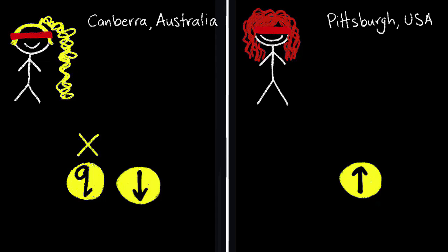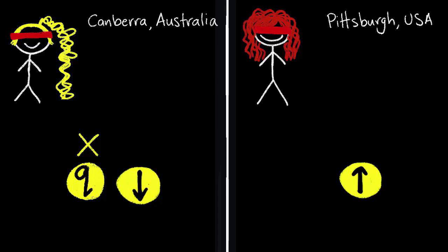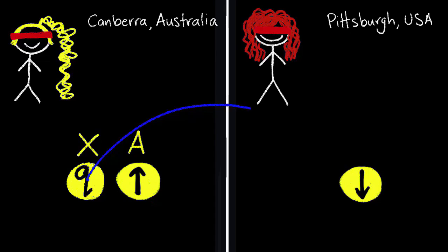If Toby in Canberra wants to send me a qubit in Pittsburgh, it needs to be embedded in a third particle, which we'll call particle X. So now Toby has particle X and the first half of the entangled pair of particles, which we'll call particle A. She wants to send a qubit from particle X to my entangled particle, which we'll call particle B.